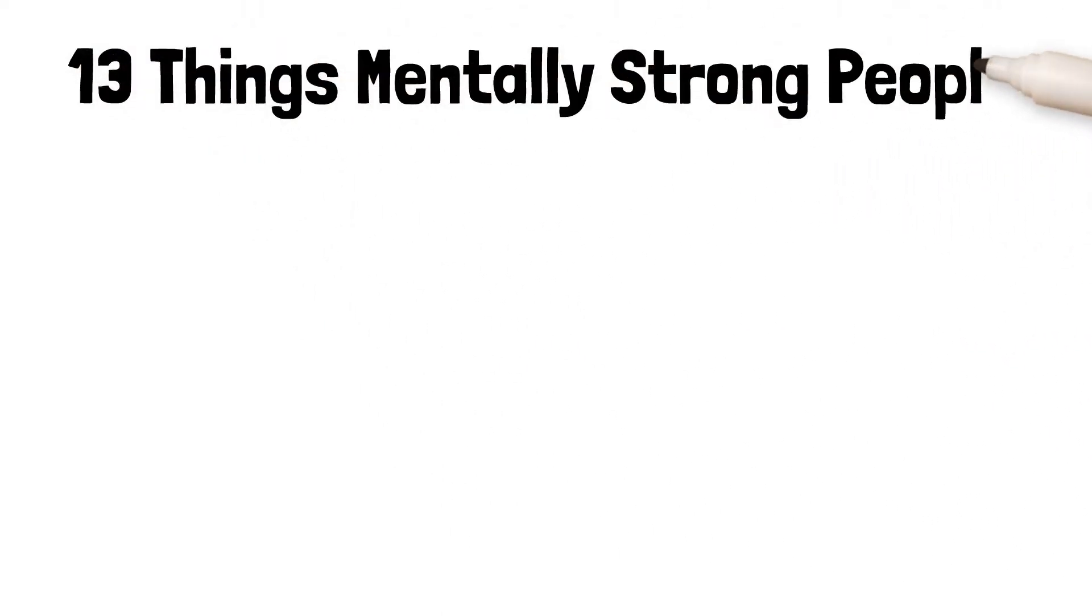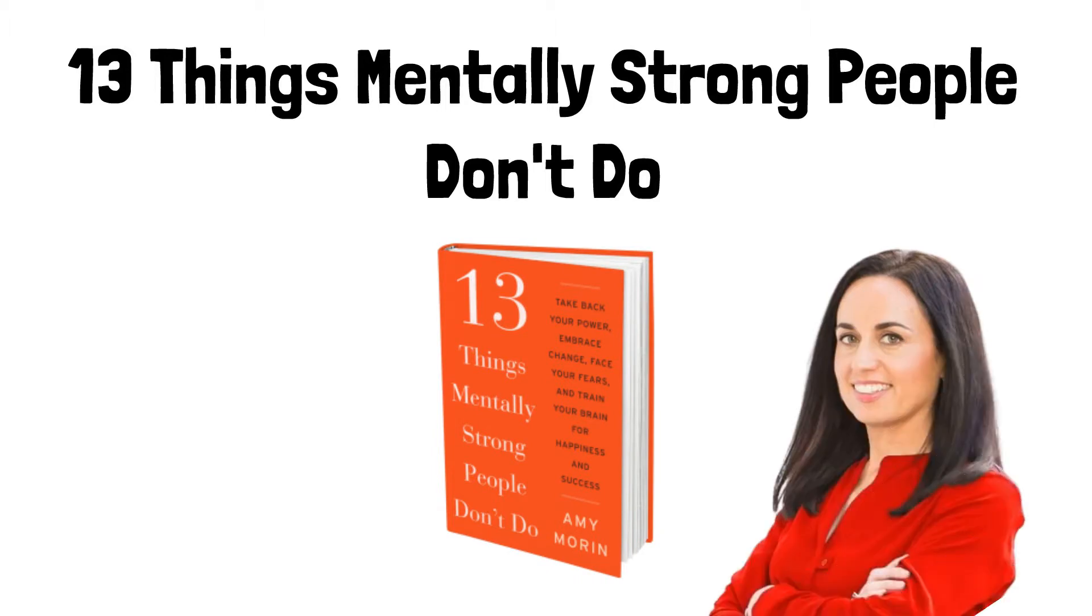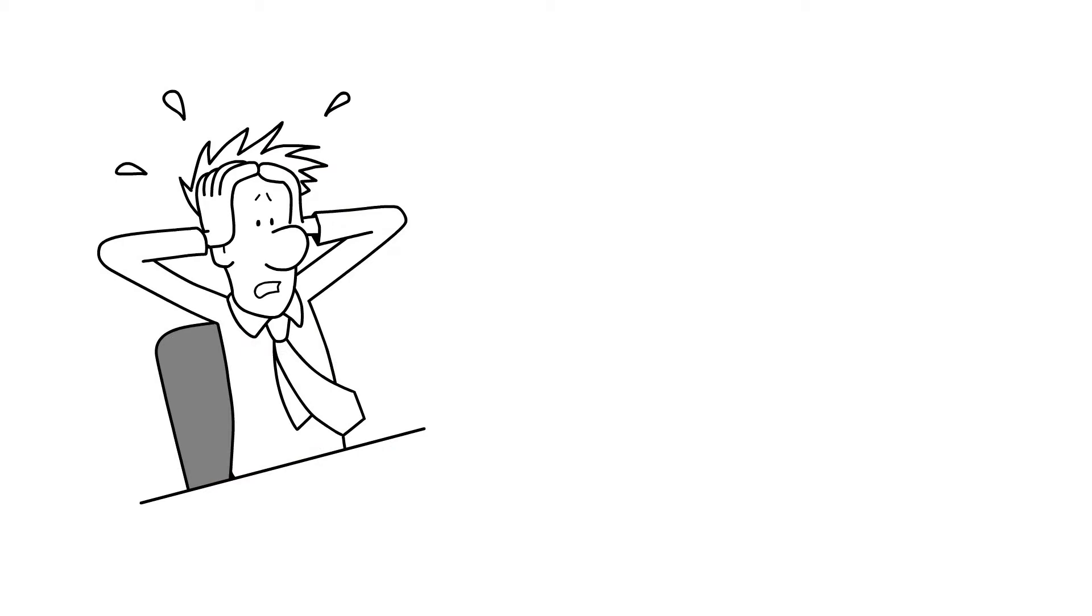This is a book summary of the book 13 Things Mentally Strong People Don't Do by Amy Morin. Do you sometimes feel like the complexities of life are getting the better of you? That's probably because they are.